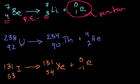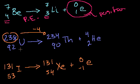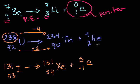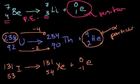Now let's look at the next one: uranium-238 decaying to thorium-234. We see that the atomic mass is decreasing by 4, and the atomic number — the protons — are decreasing by 2. So we must be releasing something with an atomic mass of 4 and an atomic number of 2 — that's a helium nucleus. So this is alpha decay, and this released particle is an alpha particle.